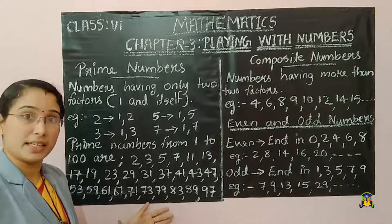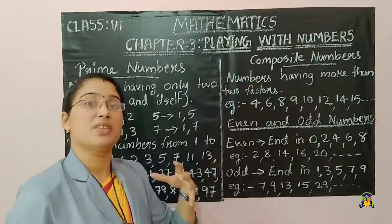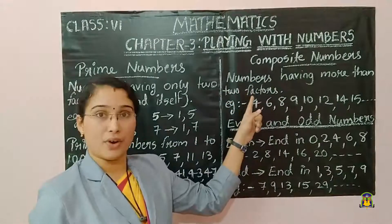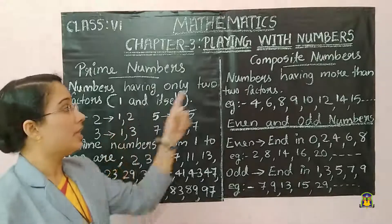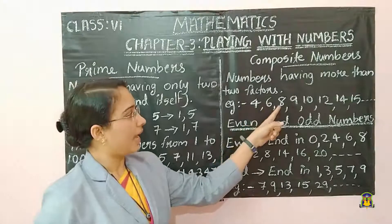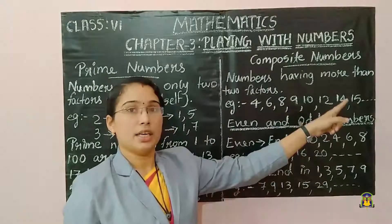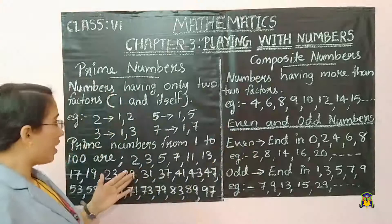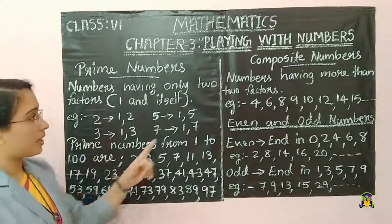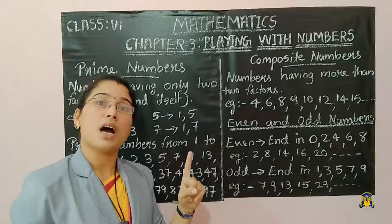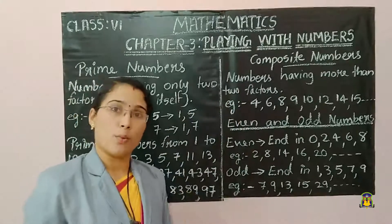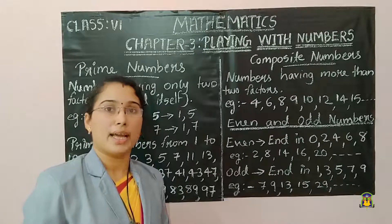All other numbers are called composite numbers. Numbers that are not prime are called composite numbers — that means numbers having more than two factors. Examples of composite numbers are 4, 6, 8, 9, 10, 12, 14, 15, etc. Also note that 1 is not a prime number and not a composite number, because 1 has only one factor, which is 1 itself. So 1 is neither a prime number nor a composite number.